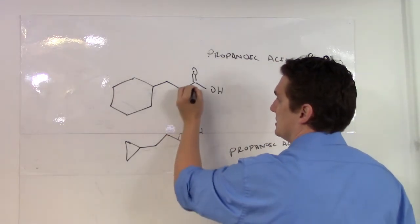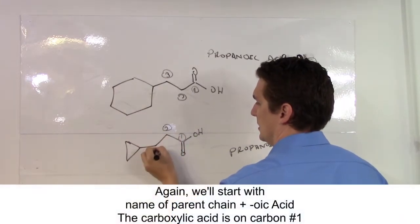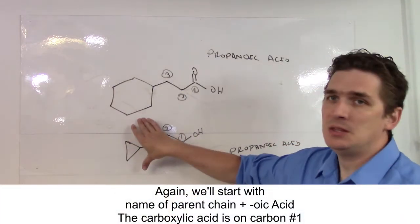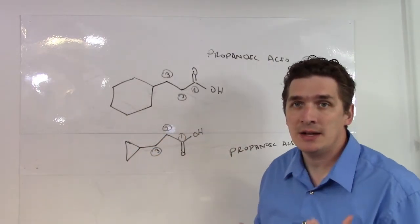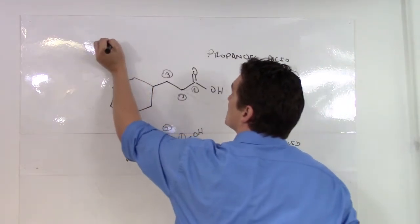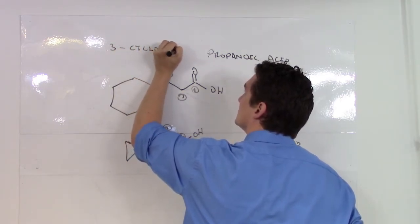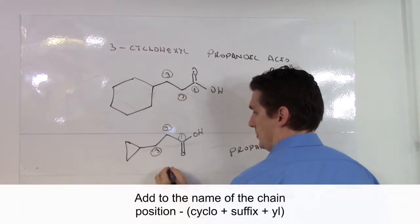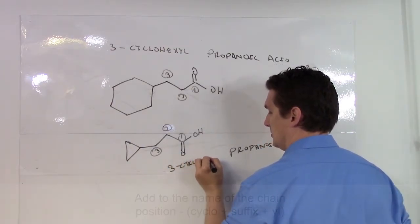And once again, our carboxylic acids here are going to take priority. The way we would name the branches is the name we would name any type of branch. In this case, it would be the cyclohexyl, or specific 3-cyclohexyl, or 3-cyclo-propane.